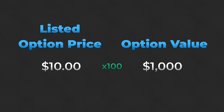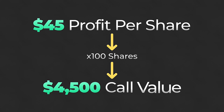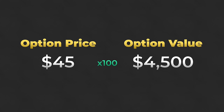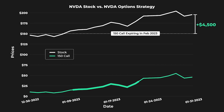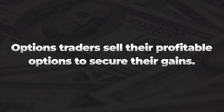As options traders, we just have to get used to multiplying option prices by 100 to get their cost or value. If we're able to make a $45 profit per share and each call contract allows us to purchase 100 shares at the strike price, then we would be making a $45 profit per share on 100 shares, generating a total profit of $4,500. This is why when we sell this call option for a price of $45, that actually means we collect $4,500 for selling the contract. Options traders simply sell the contracts at higher prices to secure their profits without needing to exercise the option.